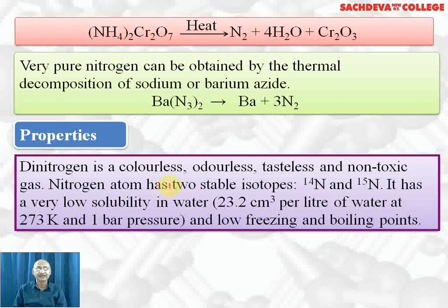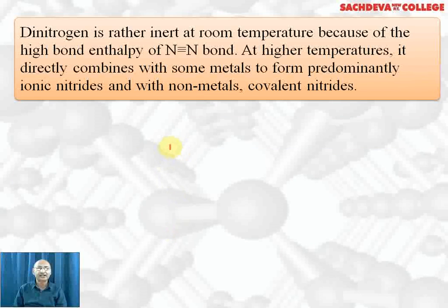Properties: dinitrogen is a colorless, odorless, tasteless, and non-toxic gas. People can die in a nitrogen atmosphere, not because it is poisonous, but due to lack of oxygen. Nitrogen atom has two stable isotopes: nitrogen-14 and nitrogen-15. It has very low solubility in water — 23.2 cm³ per liter of water at 273 Kelvin and 1 atm pressure. It has low freezing and boiling points.